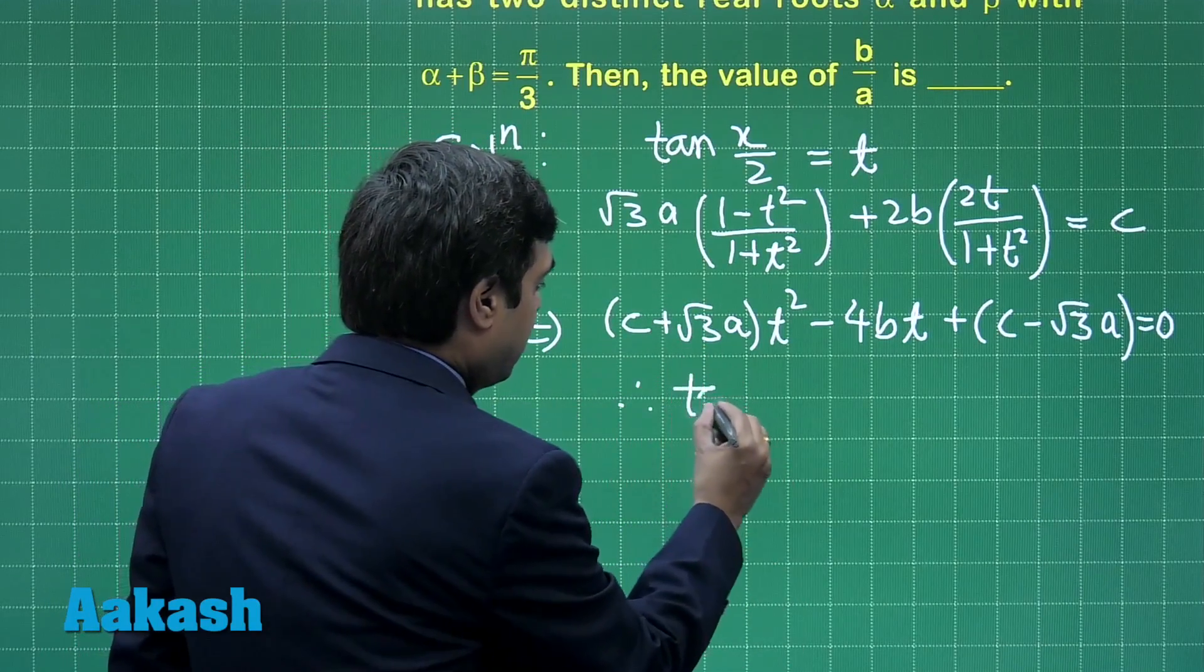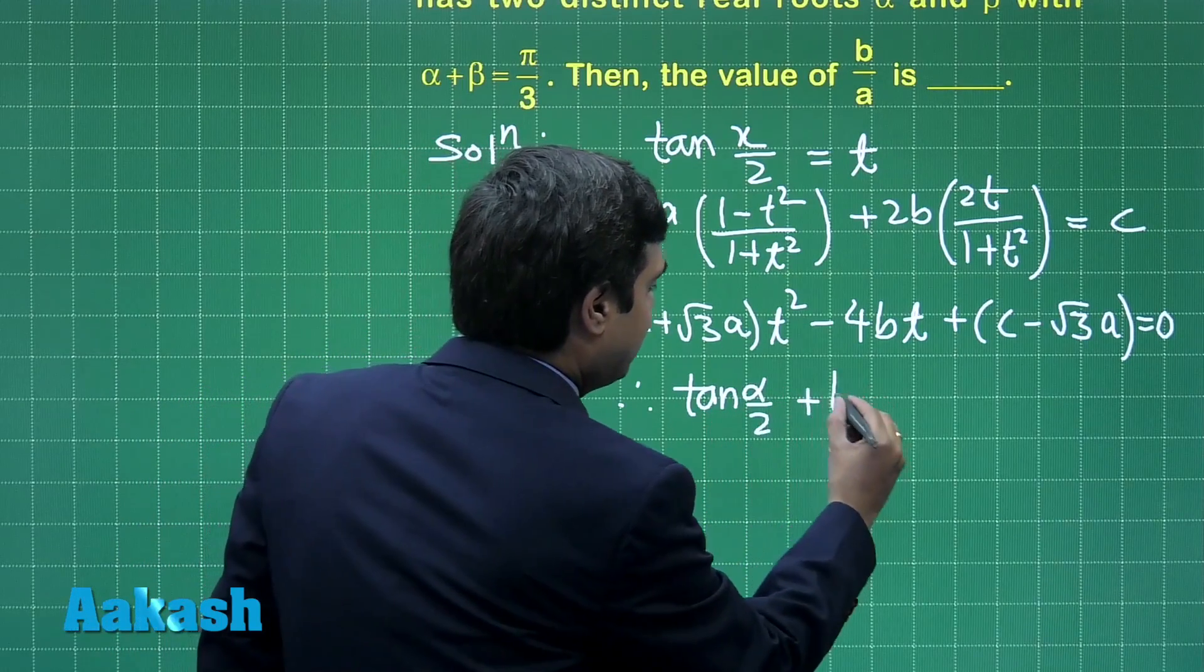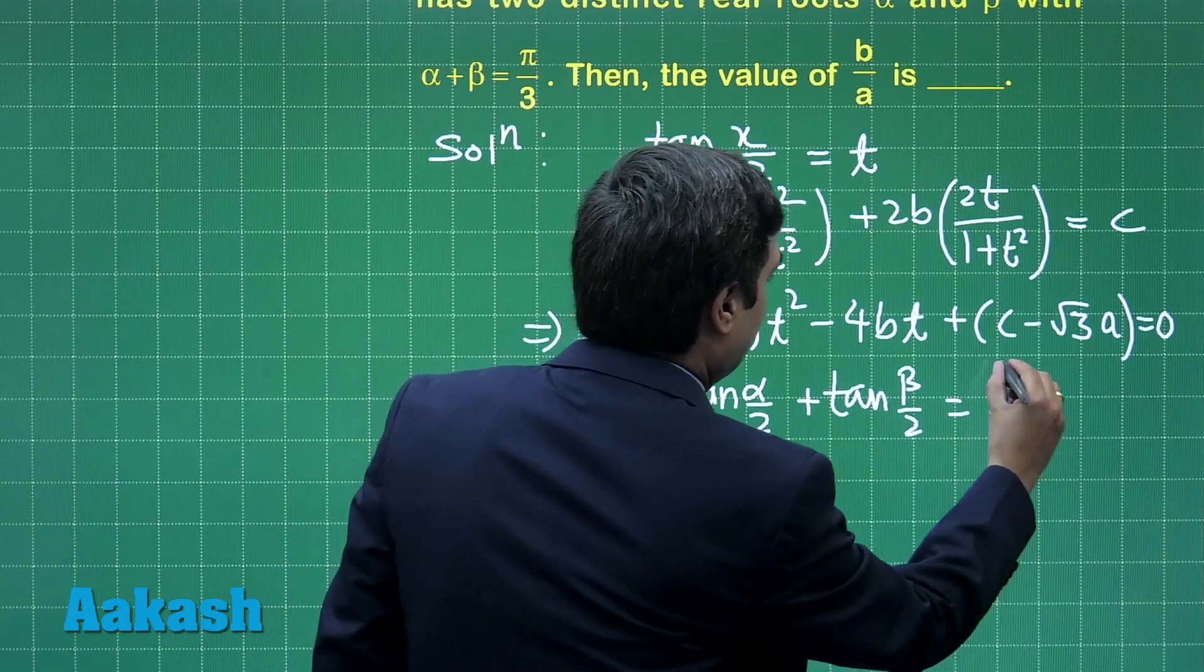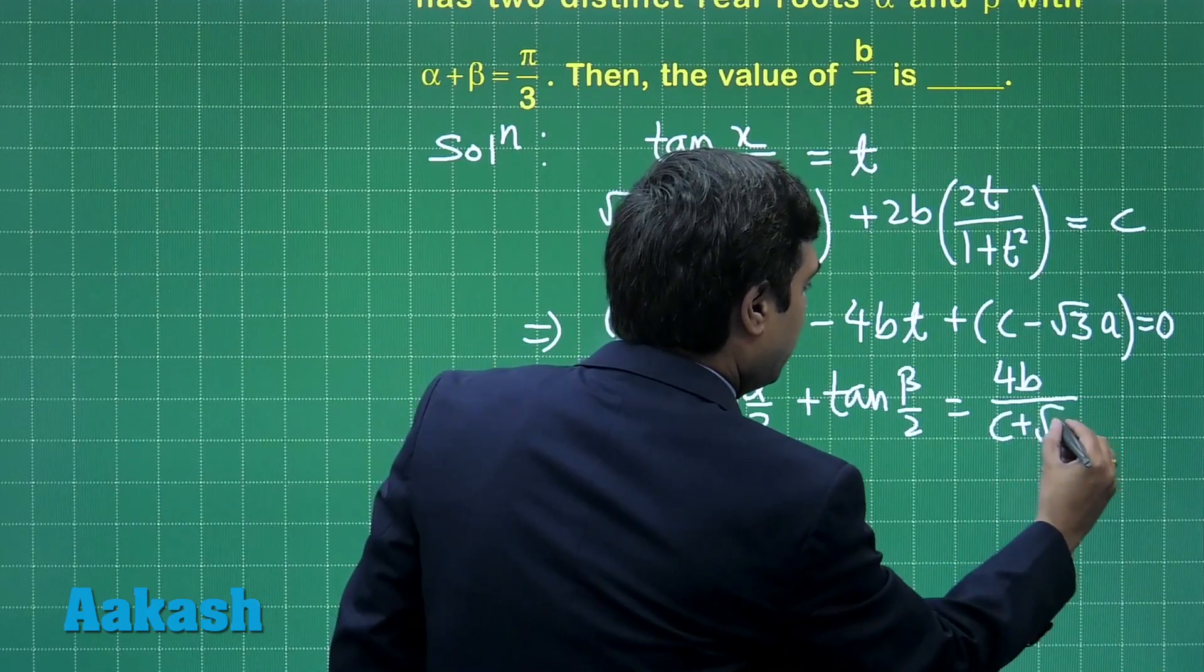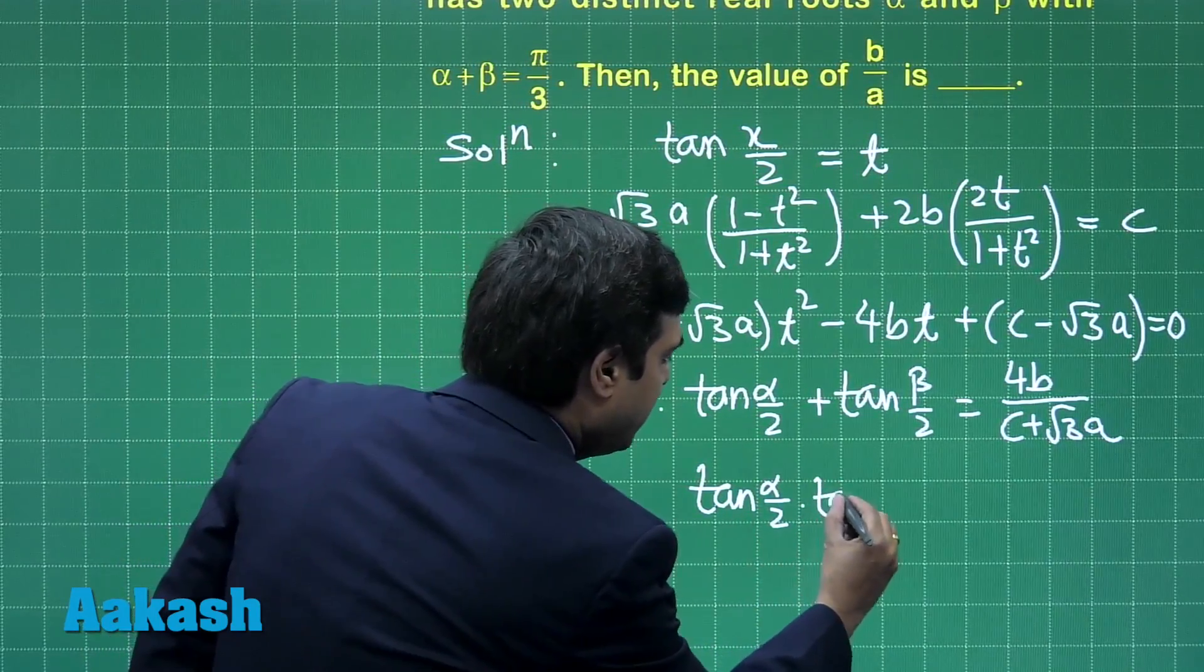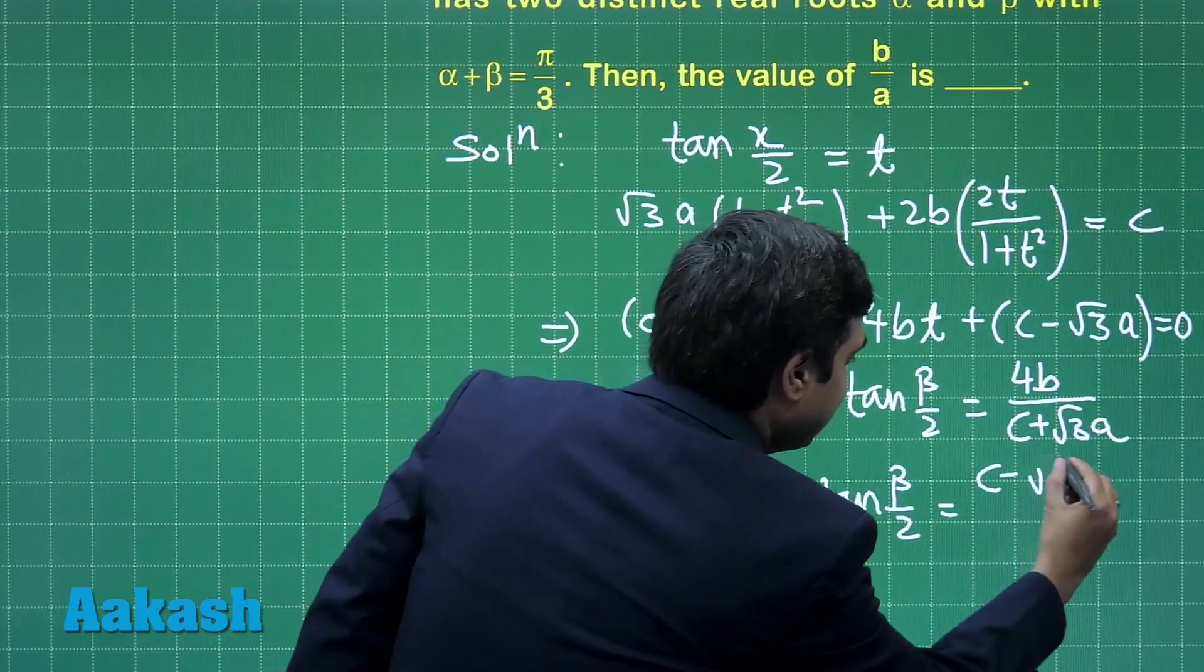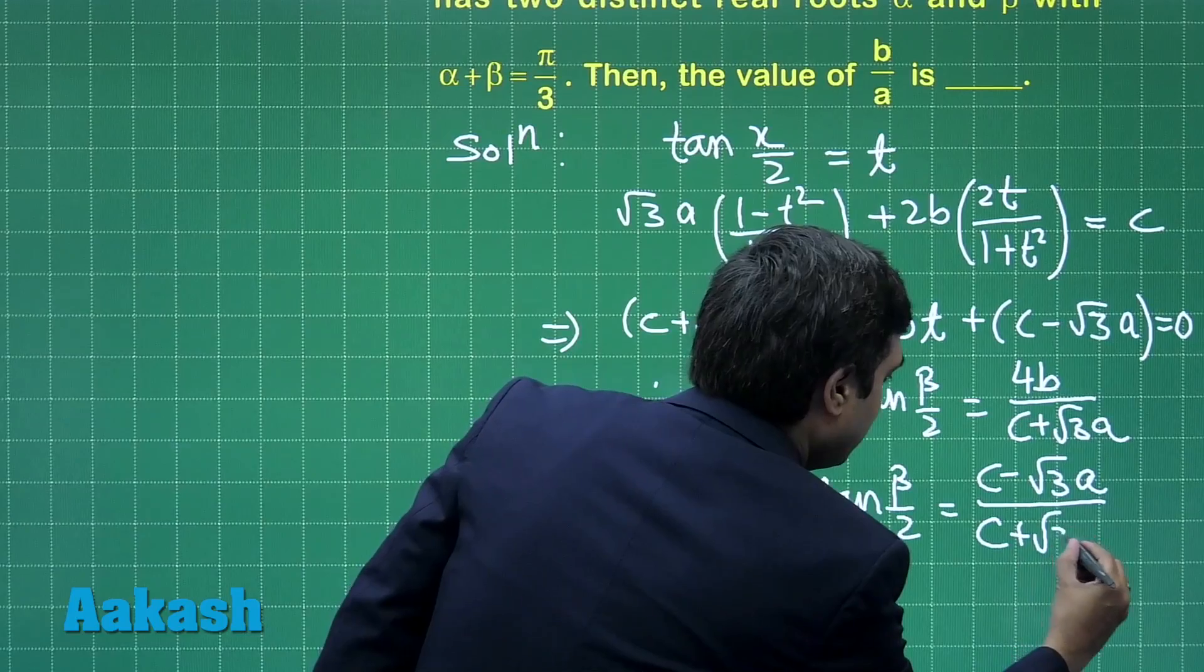Therefore, tan(α/2) + tan(β/2) = 4B/(c + √3·A), while the product of the roots tan(α/2)·tan(β/2) = (c - √3·A)/(c + √3·A).